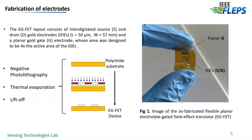First, we started with the fabrication of the interdigitated source and drain together with the planar gold-gate electrode. All the electrodes have been micro-fabricated using a single step of negative lithography, followed by thermal evaporation of chromium and gold, and finally the lift-off process. In figure 1, you can see a fabricated flexible planar electrolyte-gated field-effect transistor on a flexible polyimide substrate.